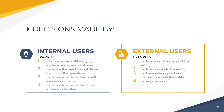Here are some decisions made by internal and external users of accounting information. Examples for internal users: analyzing profitability by products and operational units, deciding the need for cash flows to support operations, deciding whether to buy or sell business segments, and deciding whether to build new production facilities. For external users: deciding to buy or sell shares of the entity (investors), loaning money to the entity, having sales or purchase transactions with the entity (customers), and imposing taxes (tax authorities).